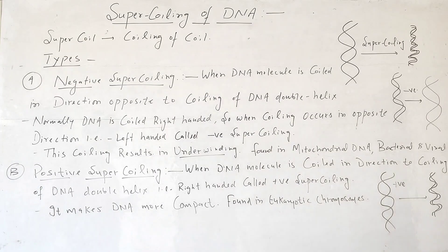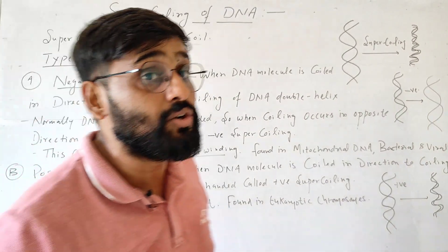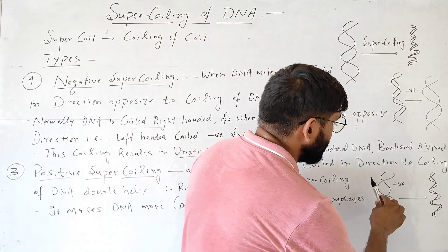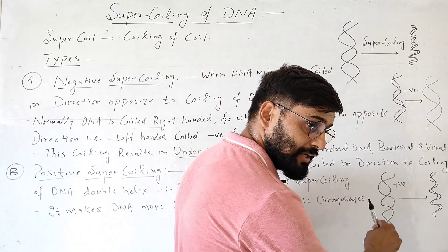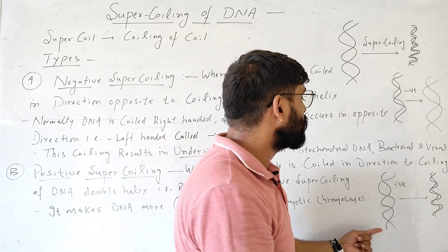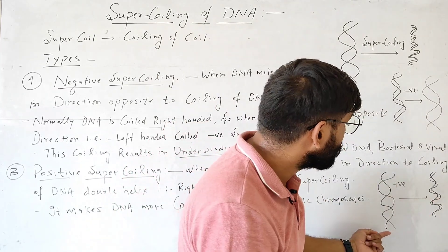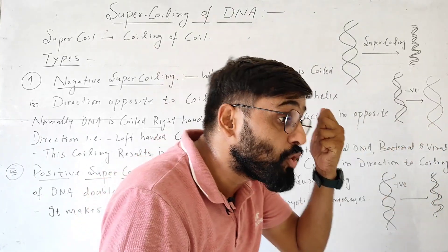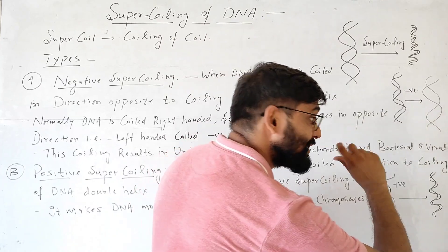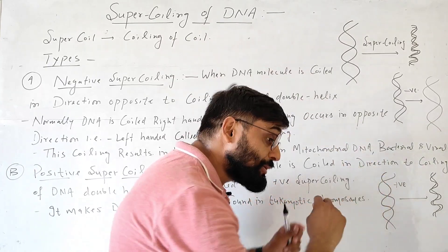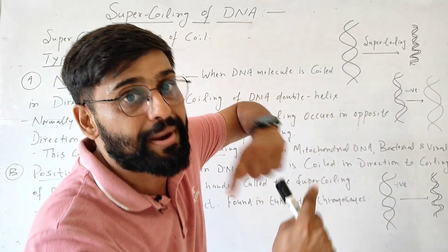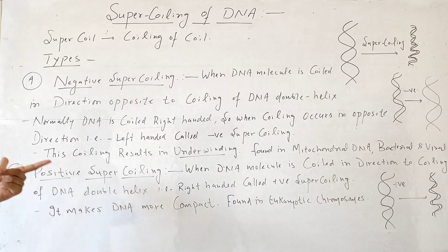The next type is positive supercoiling — when the DNA molecule coils in the same direction as the coiling of the DNA double helix. We know that the DNA double helix coils in the right-handed direction, so when there is further coiling in the right-handed direction, it is called positive supercoiling. This will cause compaction — it will make DNA more compact. Suppose we have two ropes coiled in the right-handed direction, and when we further coil them in the same direction, they become more compact. So this type of coiling is called positive supercoiling.